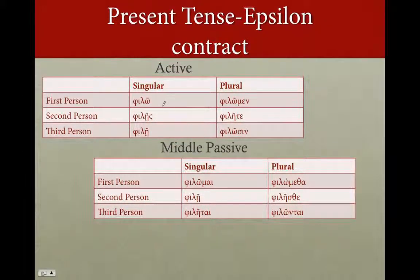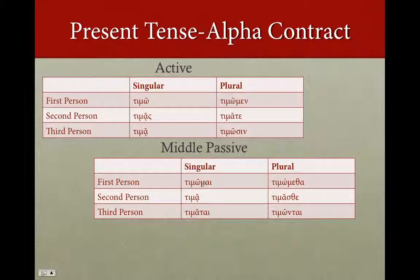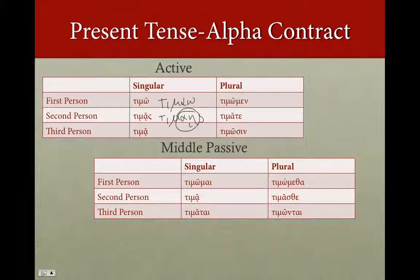Now in the epsilon contracts, we're going to have to use a circumflexed accent because we're going to have to contract. So filo, files, filet, filonem, filet, filosin. And in the middle passive: filoma, filet, filetai. The endings look the same, but what we've got here now is a contraction. The present tense alpha contracts — the alpha becomes long — so timo is a contraction of timao. Timas is a contraction of timais, and this is going to contract to a long alpha.